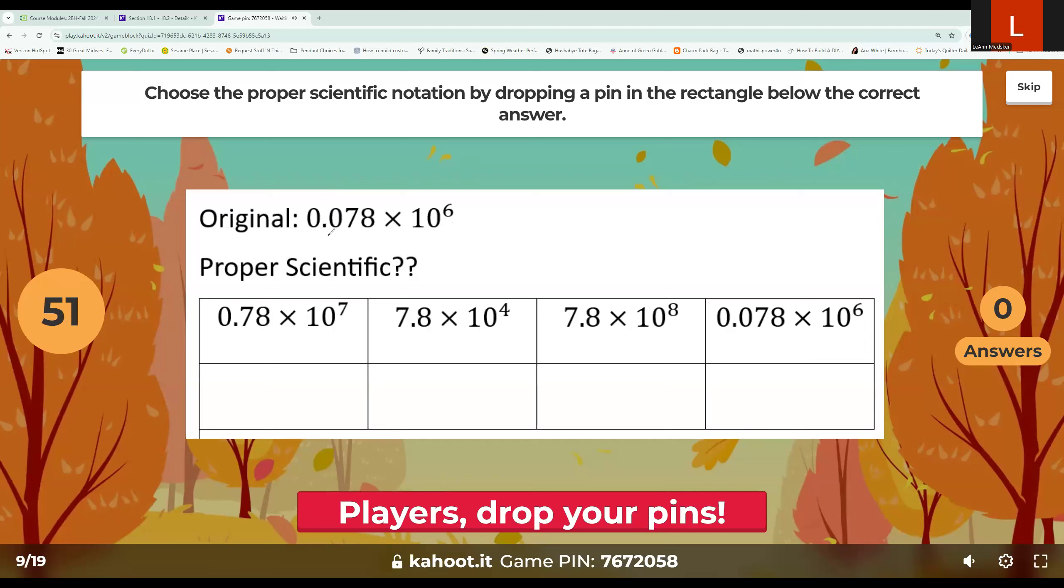Remember, that means we want one digit, 1 through 9, in front of our decimal place. Right now we have a 0 in front of it, so that's not going to work. So I need to move this two places to the right and make it 7.8. And remember, our rule called LARS said if you move left, you add to your exponent. If you move right, we subtract. So we moved two places to the right, so we're going to subtract 2 from our exponent. So this would be 7.8 times 10 to the 4th.